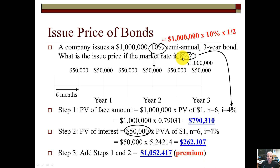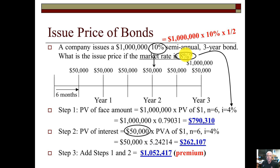Since the market rate of interest is below the stated rate of interest, the company's bond will sell above face value. We always discount using the market rate of interest. Since the market rate is lower, less discounting takes place, so the present value of the cash flows is higher — above face value — which is the premium situation.